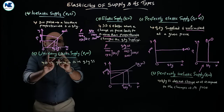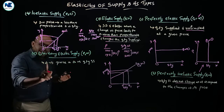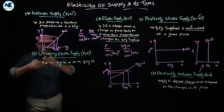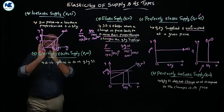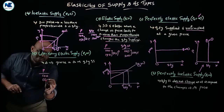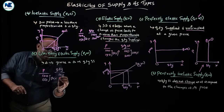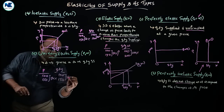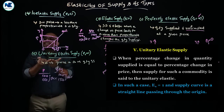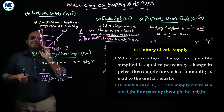The last type is unitary elastic supply, where elasticity of supply equals 1. Here, a change in price leads to exactly an equal proportionate change in quantity supplied. For example, price increases from 100 to 150 — a 50% rise — and quantity supplied also increases from 100 to 150 units — also 50%. The percentage change in quantity supplied equals the percentage change in price.